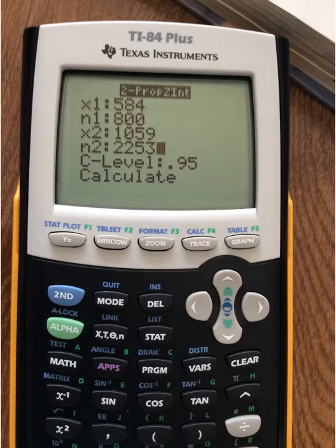And this is what we get. So, 73% of 800 teens is 584 teens. And then, 47% of 2,253 is 1,059. Plug those numbers in. 95% confidence interval. And let's see what we get.